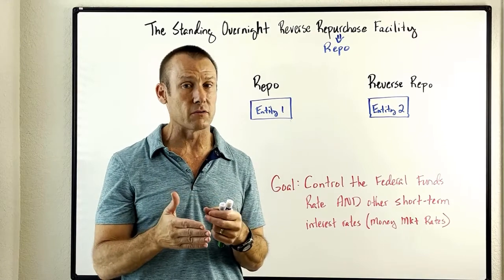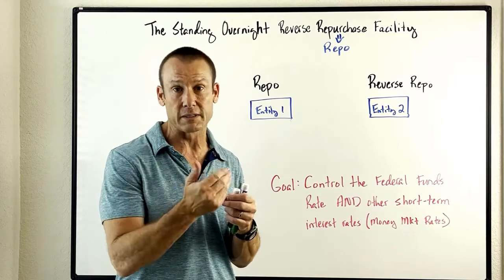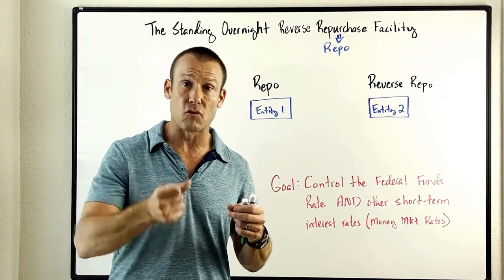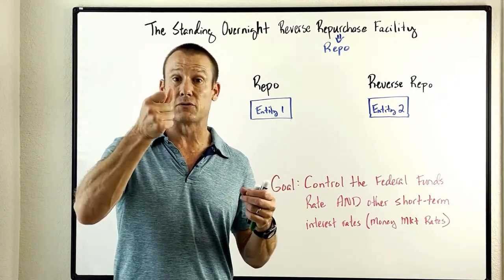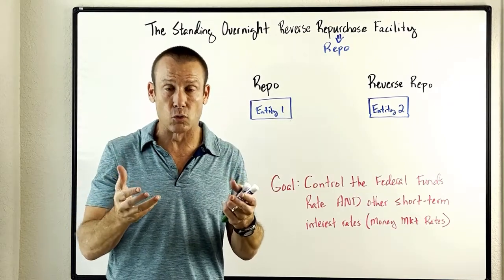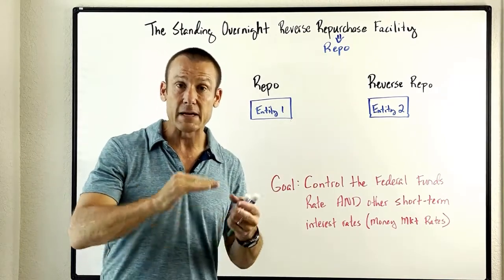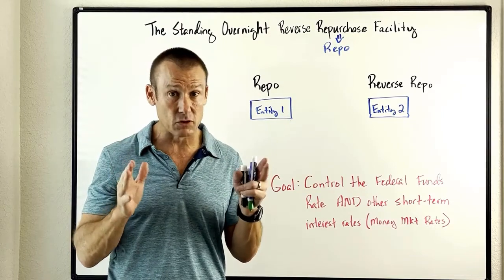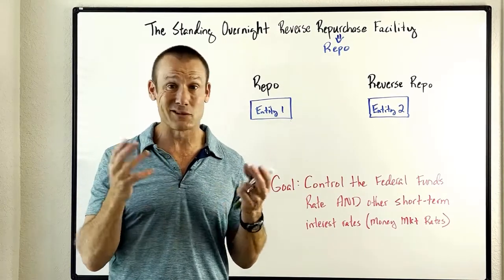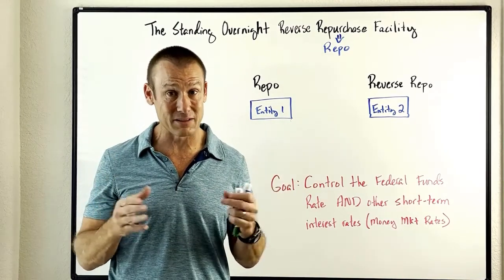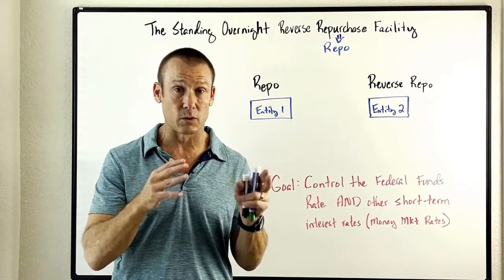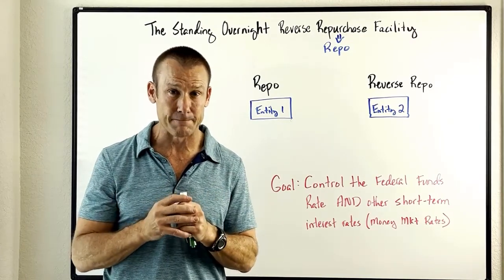Previously, they'd do an open market sale to reduce the supply of reserves in the banking system, driving up the federal funds rate. No longer. They needed a new tool to raise the federal funds rate because under an ample reserve framework, changing the supply of reserves isn't going to have an impact on the federal funds rate. See videos one, two, three, and four to really understand that.